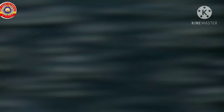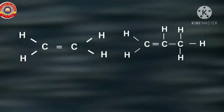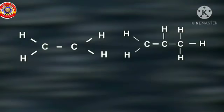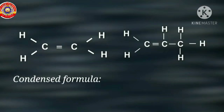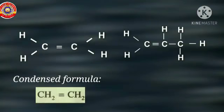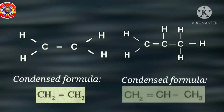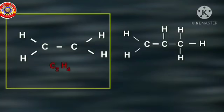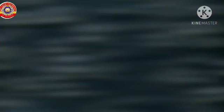What is the molecular formula of an alkene with two carbon atoms? It is C2H4. The molecular formula of an alkene with three carbon atoms is C3H6. The condensed formula of an alkene with two carbon atoms is CH2=CH2, and with three carbon atoms it is CH2=CH-CH3.